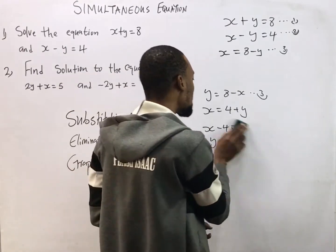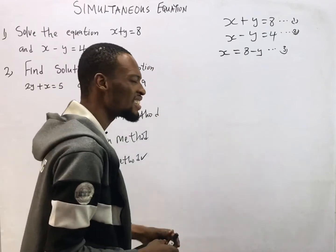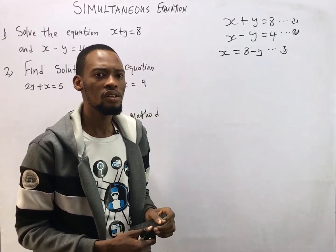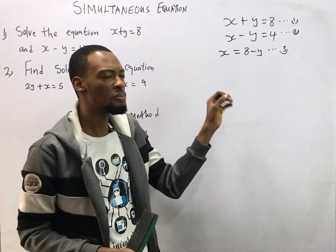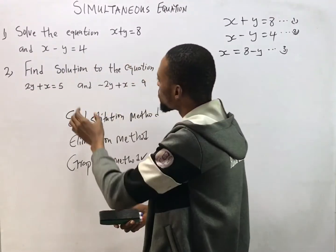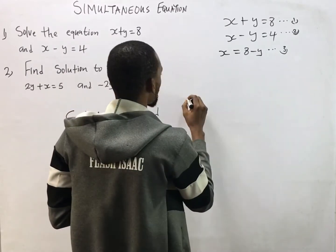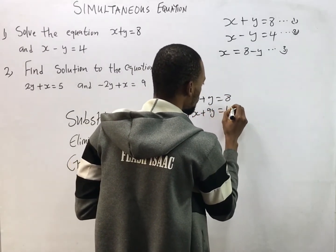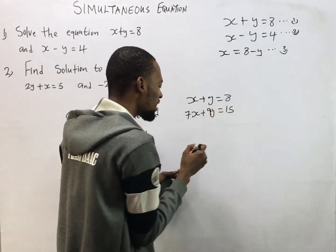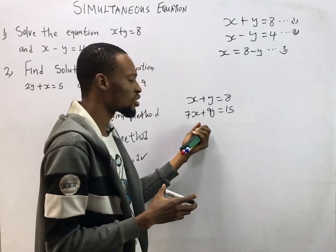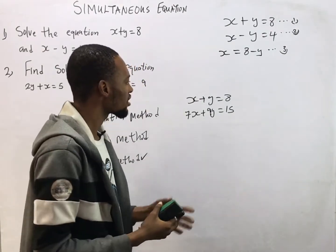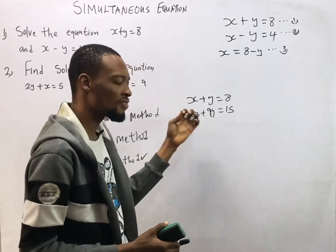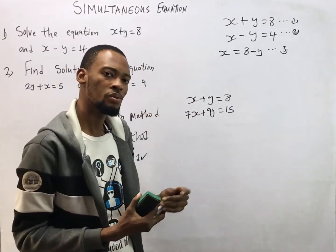Anyhow you do it, you get the same answer. As a tip: choose a simpler equation to make the subject formula. Looking at two equations like s + y = 8 and 7s + 9y = 15 — it is easier to make s or y the subject formula in equation one than in equation two, because equation two has more complex values. That's a tip you should take very seriously.